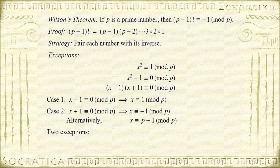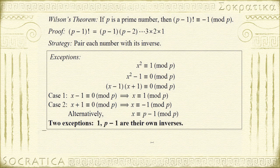So 1 and p minus 1 are their own inverses. But every other number mod p can be paired with its inverse and it'll be a different number.